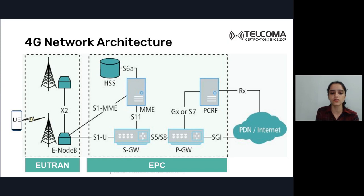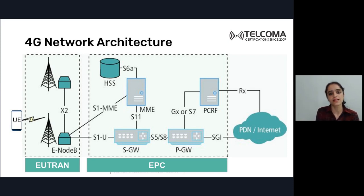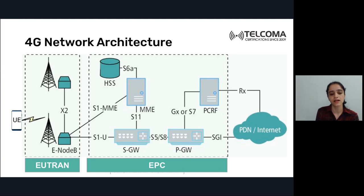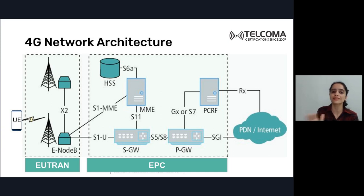E-UTRAN is connected to the EPC via the S1 interface, which is of two types: S1U for the user plane, responsible for carrying all the data, and S1MME, also called S1C, for the control plane which carries all the signaling.